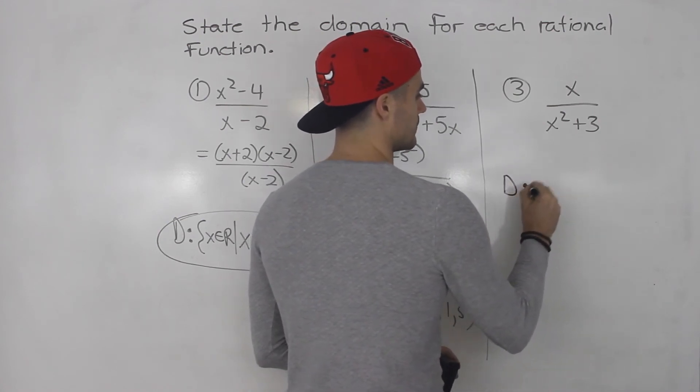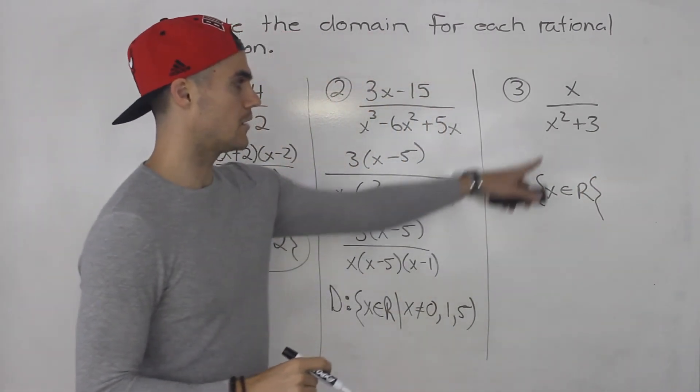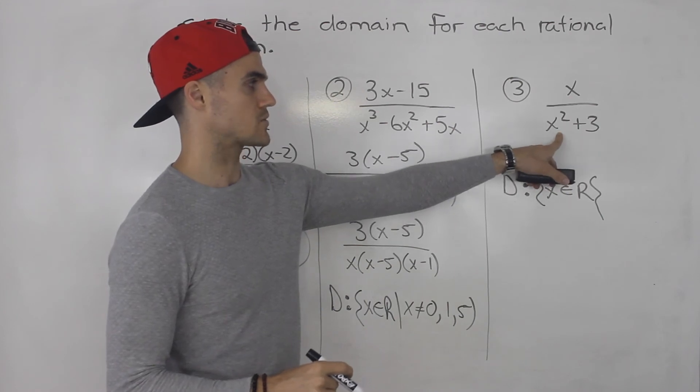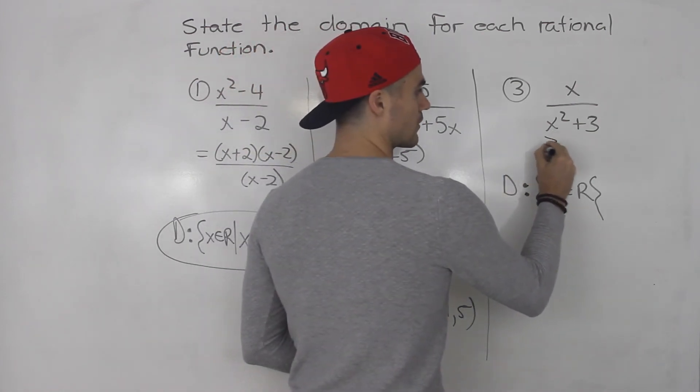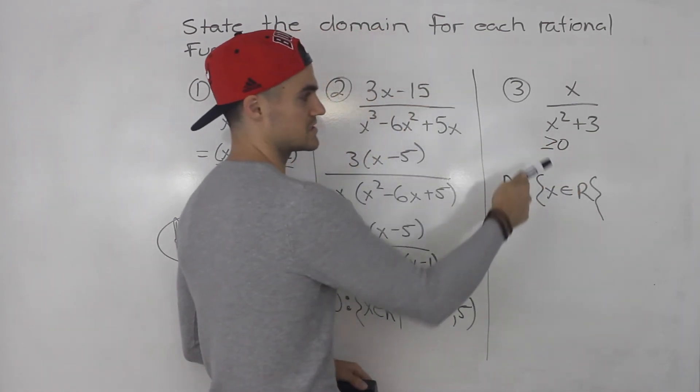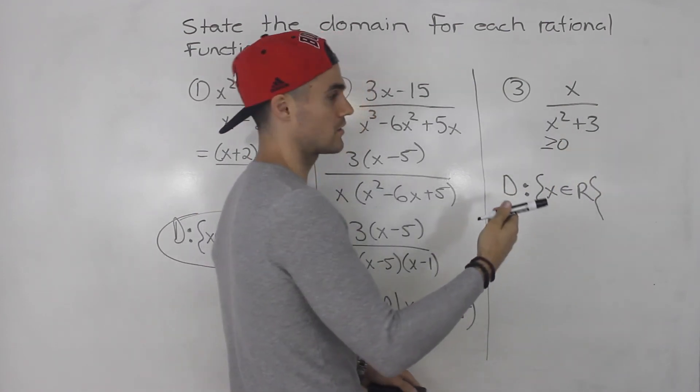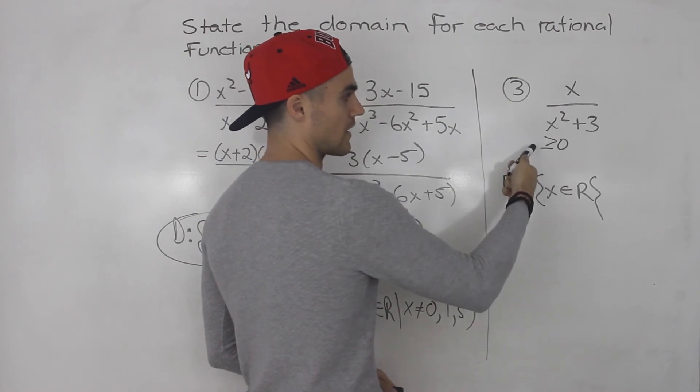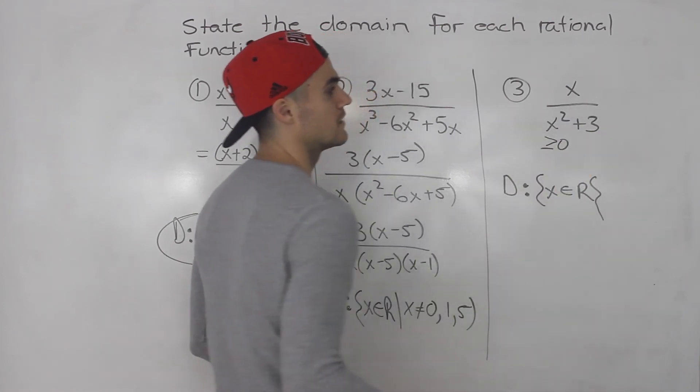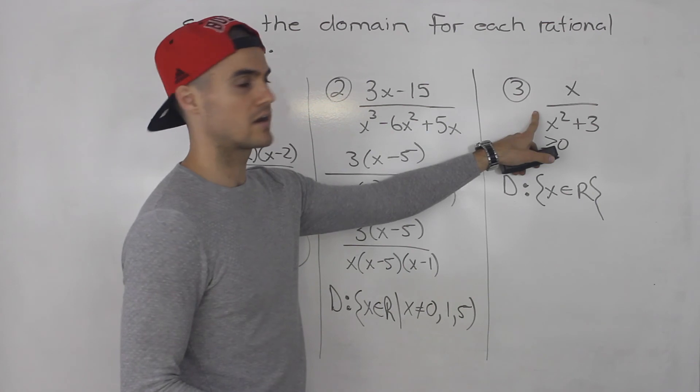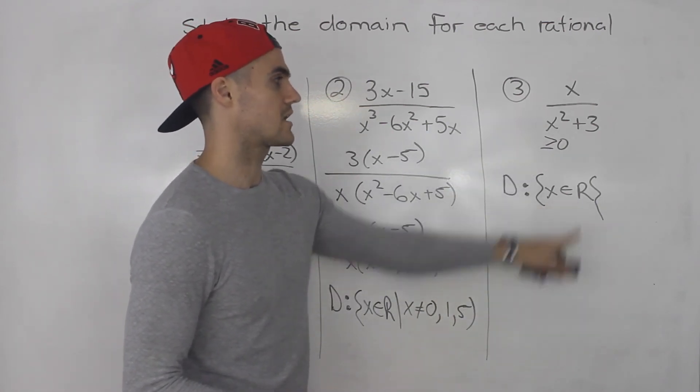Basically, the domain for this rational function is x∈ℝ. Because if you think about it, the denominator can never equal 0. x²+3 will always be positive, because x² is either going to be greater than or equal to 0. It could be 0 if x is 0, but then you'll have 0+3, which would make it positive 3 in the denominator. Or x² is going to be greater than 0. A positive number plus 3 gives us a further positive number. So the denominator can never equal 0. There's no restriction. So the domain is just x∈ℝ. x can be anything.